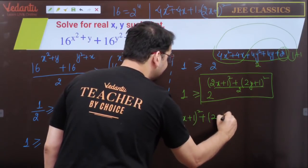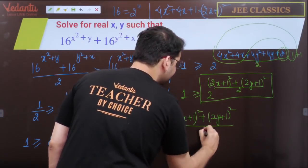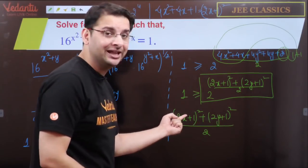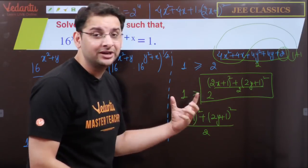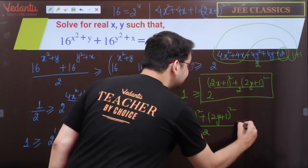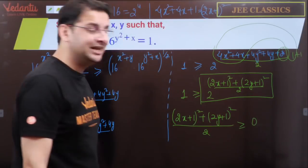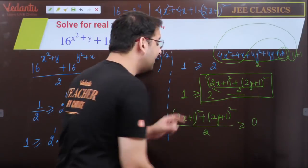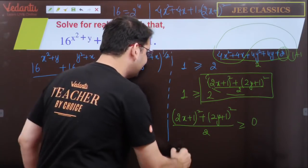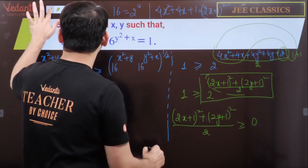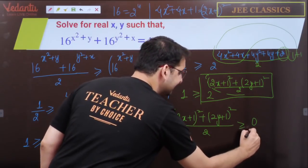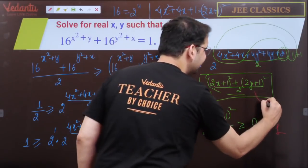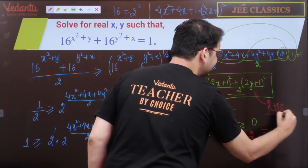Now square of a number plus square of a number - this is non-negative, this is also non-negative. The sum of two non-negative numbers has a minimum of zero. So this power is always greater than or equal to zero. So 2 to that power is greater than or equal to 2^0, which is 1.